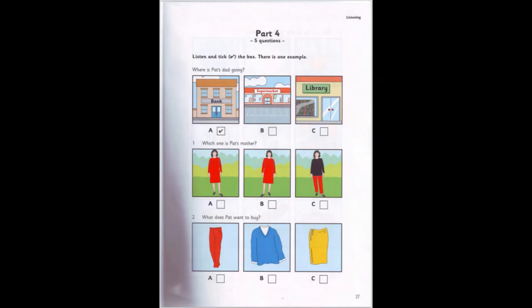2. What does Pat want to buy? Where are you going to go now, Pat? I'm going shopping. What do you want to buy? It's my birthday on Sunday, and I want something new to wear at my party. Do you want some new trousers? No, I'd like a skirt, because my mum gave me a beautiful blue sweater.